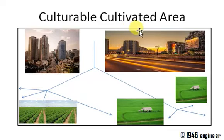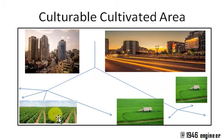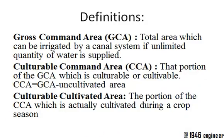Within the total Gross Command Area, the actual part of the land which is getting cultivated is called the Cultural Cultivated Area. To revise: Gross Command Area is the complete area which is getting benefited by that water supply.